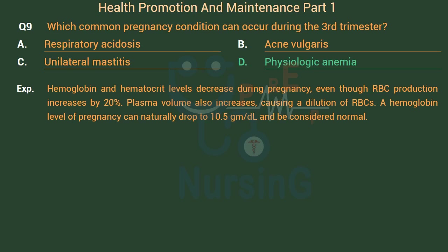Hemoglobin and hematocrit levels decrease during pregnancy, even though RBC production increases by 20%. Plasma volume also increases, causing a dilution of RBCs. A hemoglobin level during pregnancy can naturally drop to 10.5 g/dL and be considered normal.